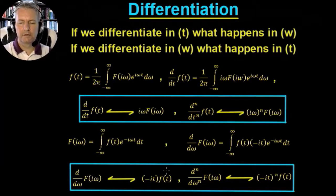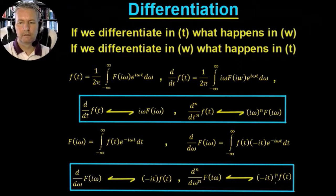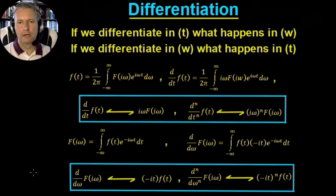The same logic applies for the nth derivative with respect to frequency — we get (minus it)^n times f(t). So those are our four transform pairs. We'll now look at them graphically, and then we'll go into MATLAB to see them demonstrated.